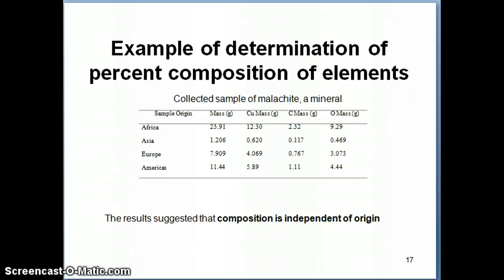And there's a couple of reasons why this is important. The first is written right here, which is that what this tells us is that the composition of a substance, remember that at that time people didn't know that things are composed of atoms, but what it suggests is whatever makes up the material that you have is independent of origin.